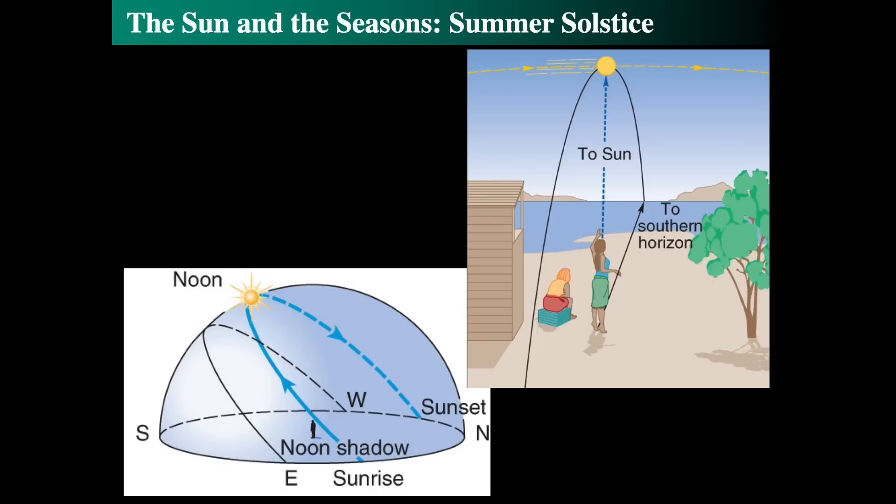But if we watched the sun, we would see it would rise very far north of east, get to that high point, and set very far north of west. Notice that the length of the shadows is short, and the days then, because the sun is in the sky longer, would be longer. But the short shadows are a key.